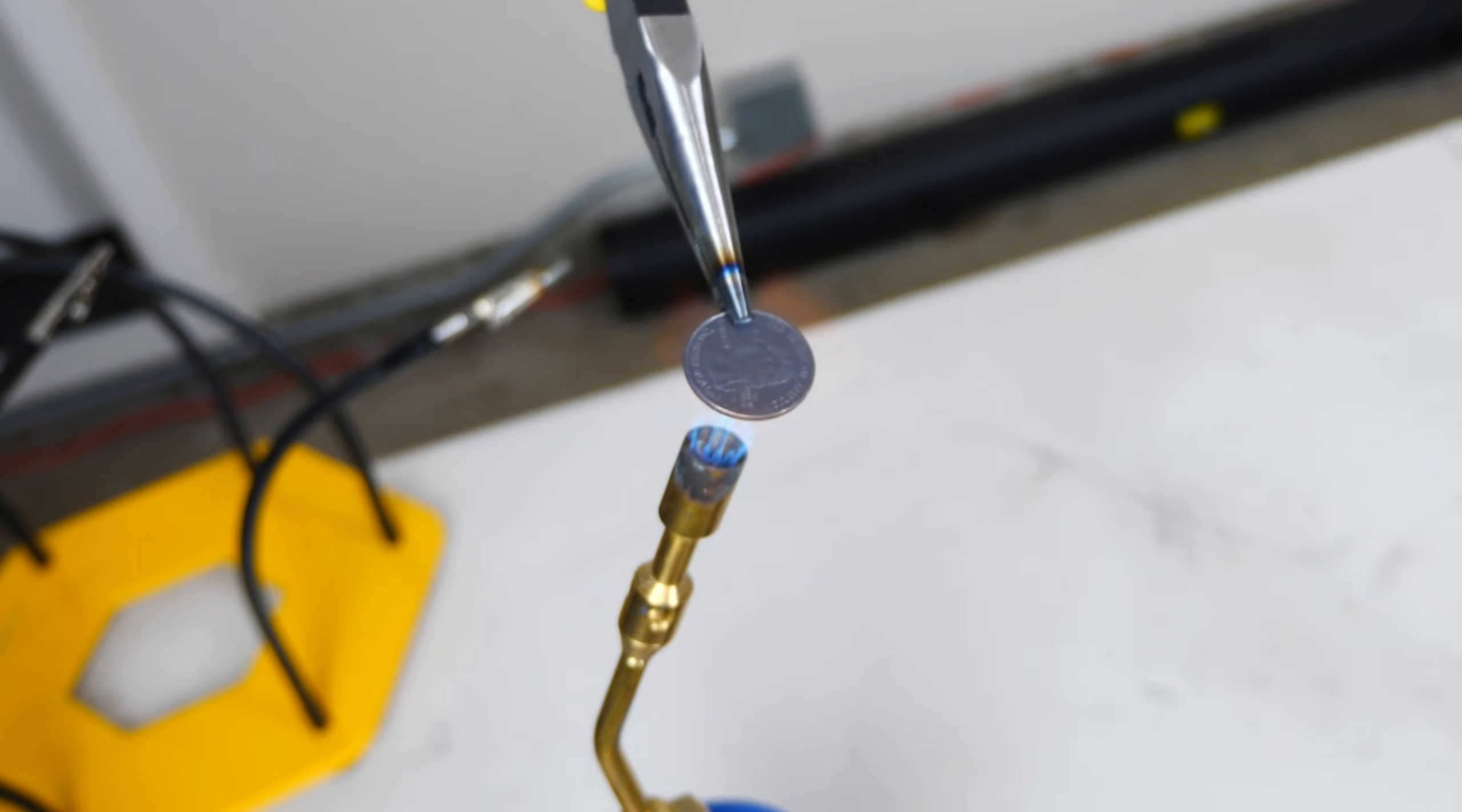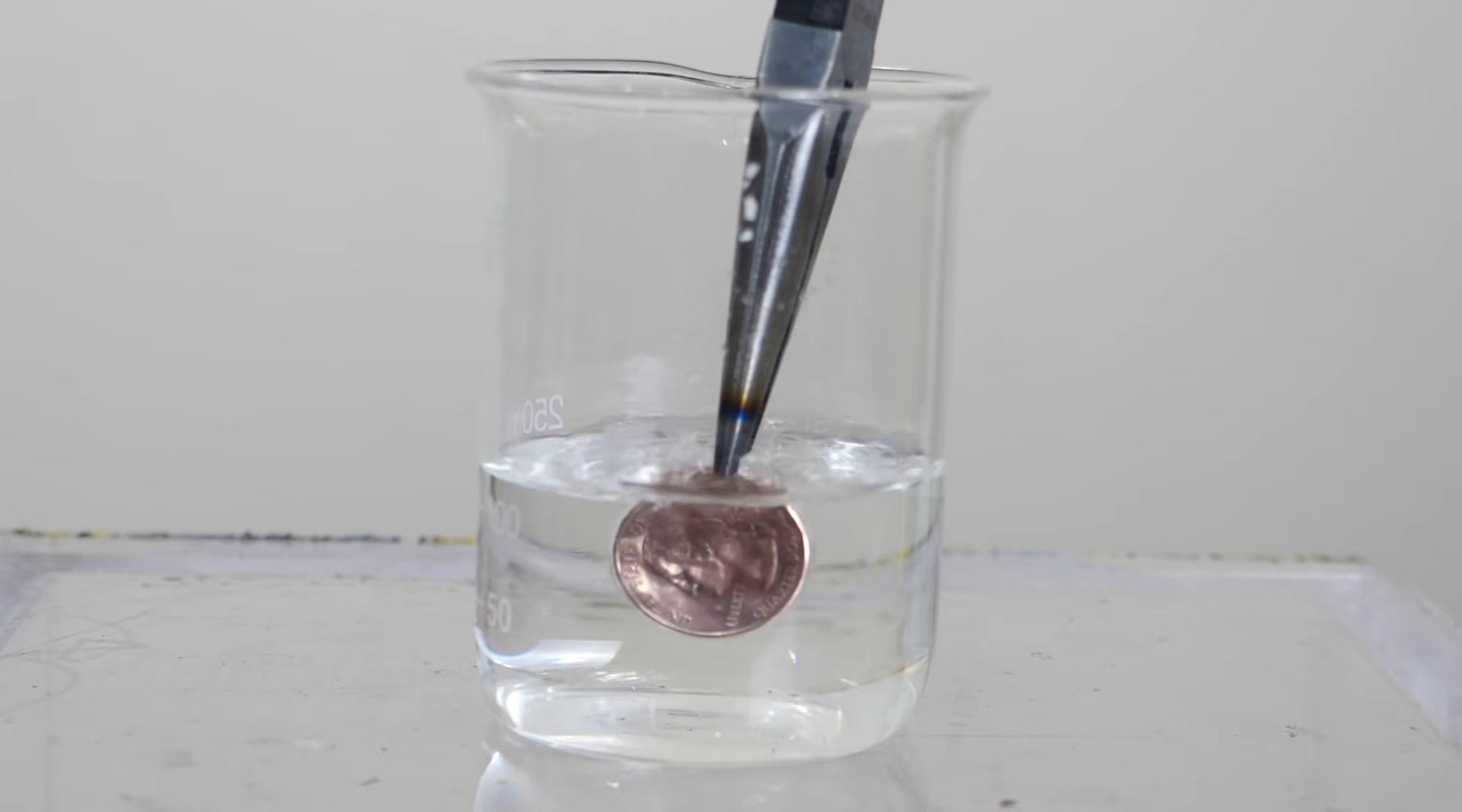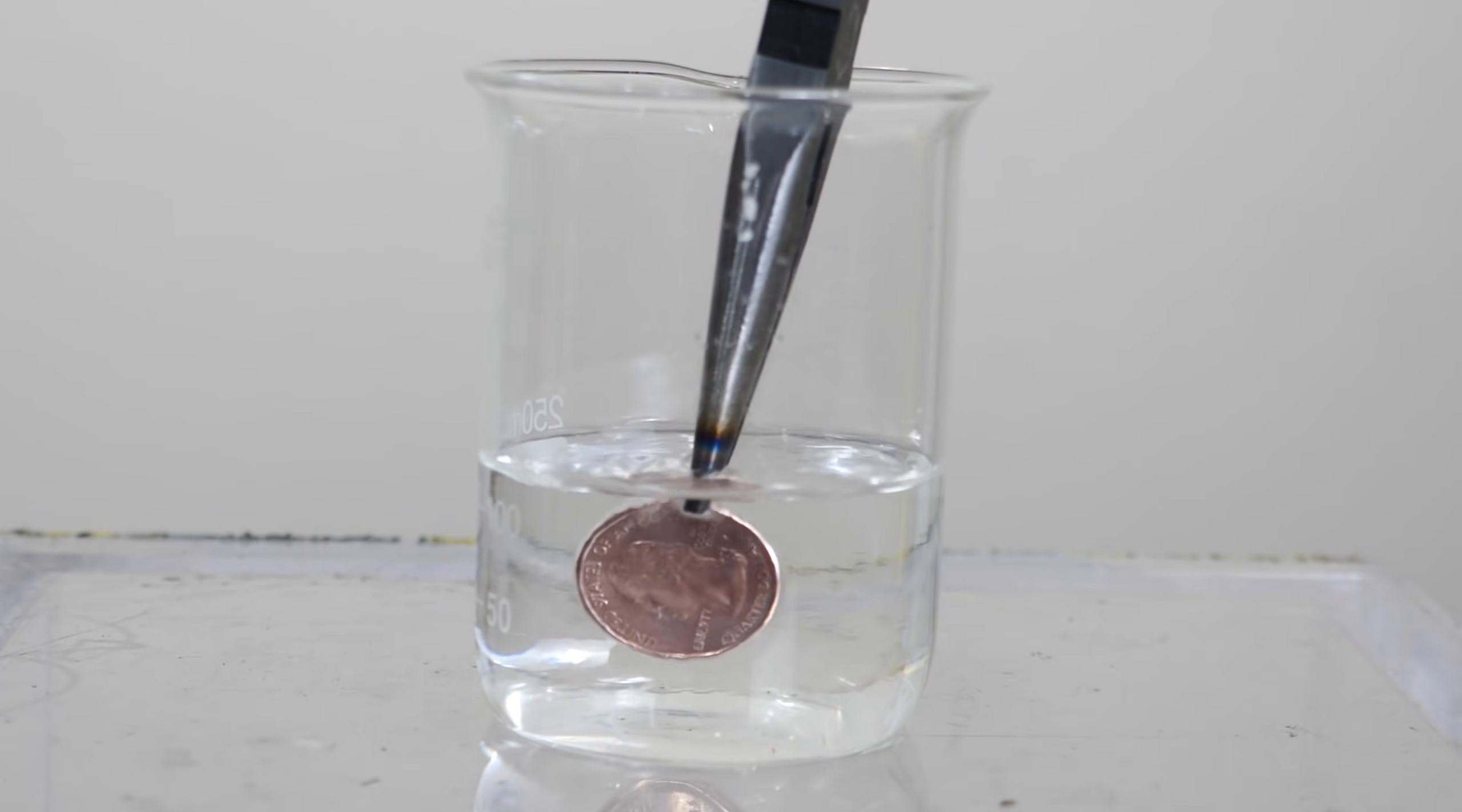So at this point this is where you need to dunk it in the methyl alcohol. Okay, look how black it is, then dip it in and it magically becomes copper.